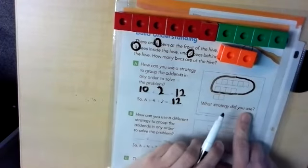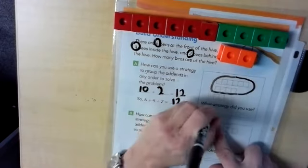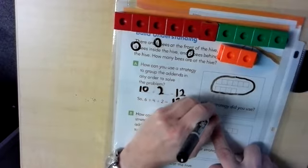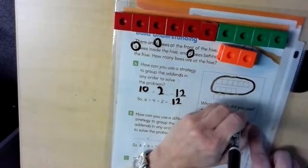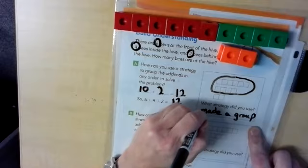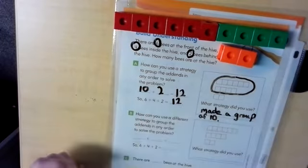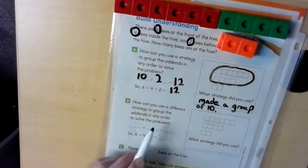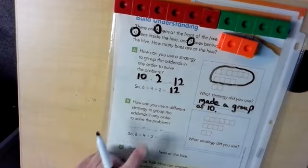So what strategy did we use? Remember when we put these two together, we made a group of ten, right? So we made a group of ten. If you need to pause it a minute so you can write that in, then when you're finished writing it in, come on back and we'll look at our second way.